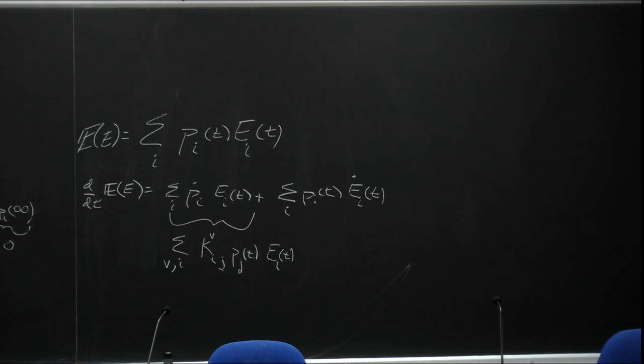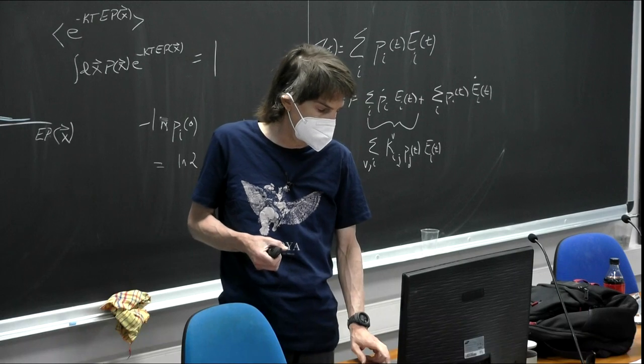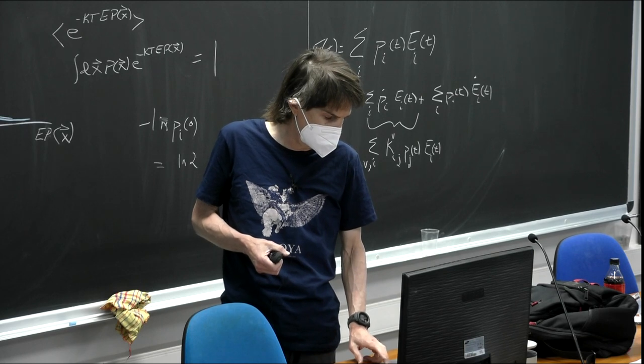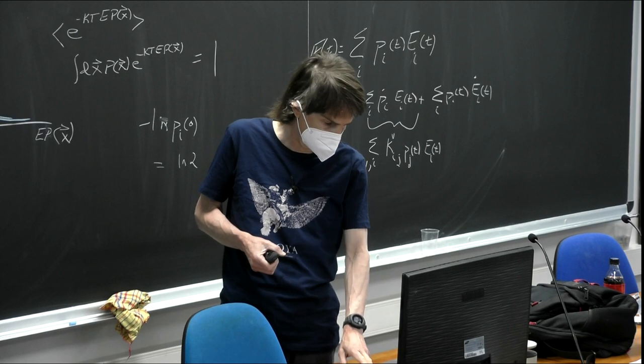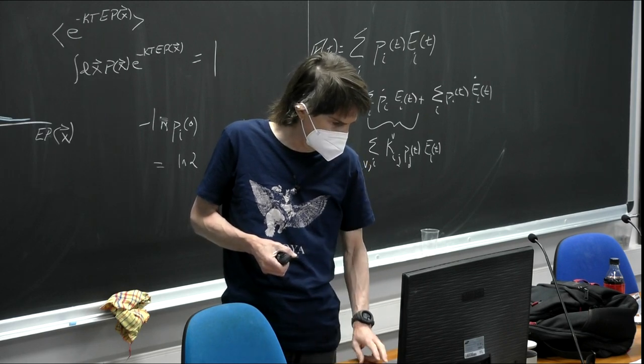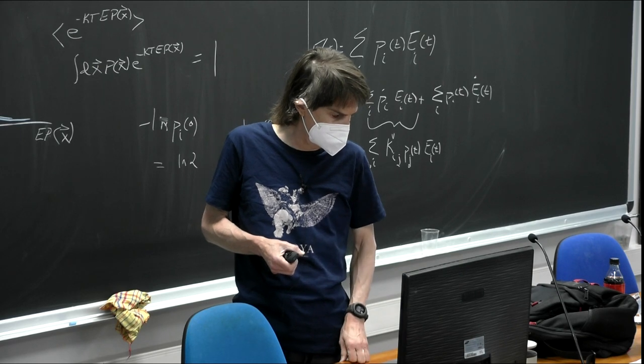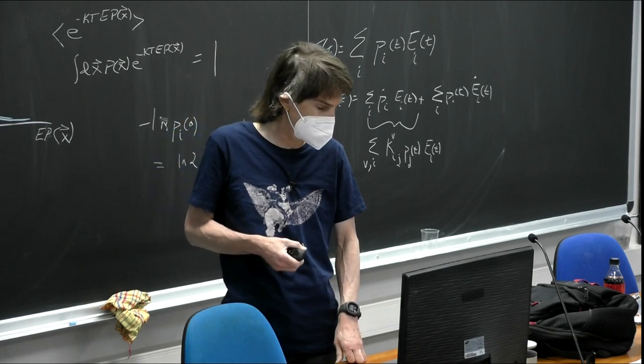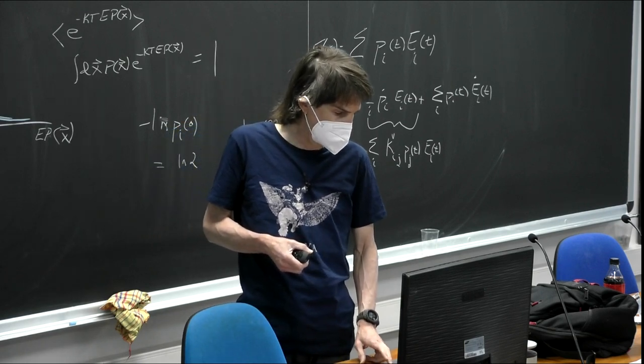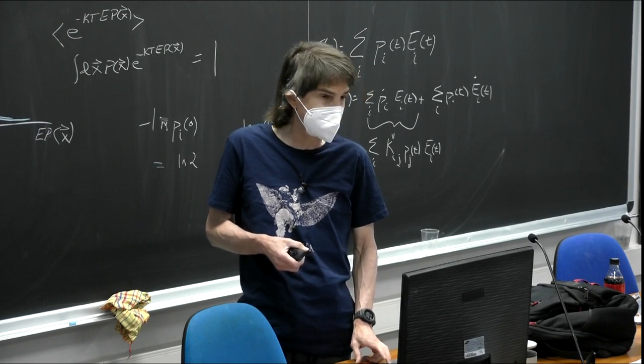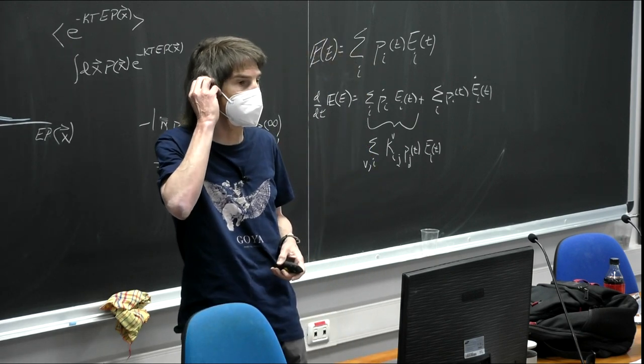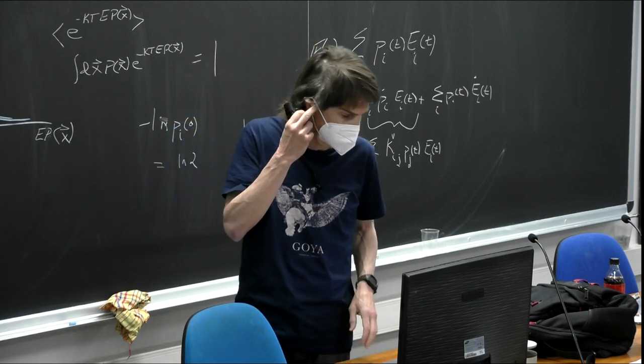So notice also that here, in the heat flow term, it's the sum over reservoirs of beta for each reservoir. So if you have multiple reservoirs at different temperatures, then this is going to be the sum over those reservoirs over the heat flow terms.